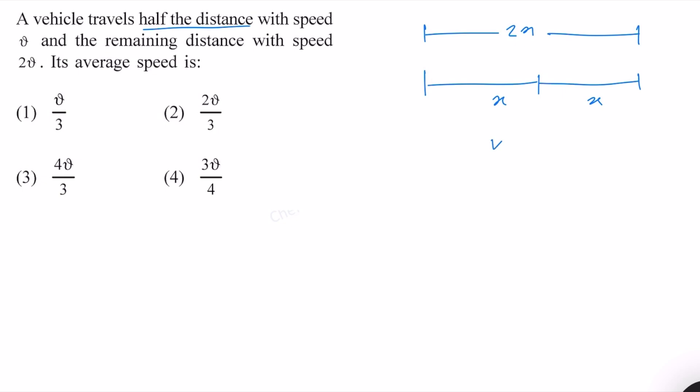Half the distance with the speed v, the remaining distance, the other half, with 2v. Time taken t1 here, time taken here is t2, because if the speed is different then the time has to be different.